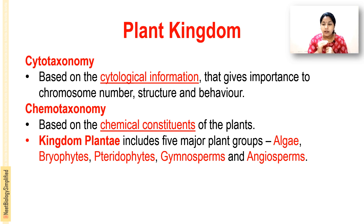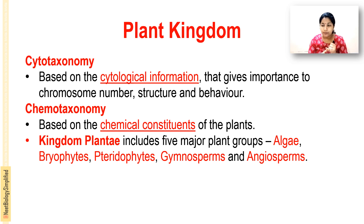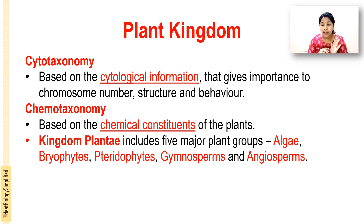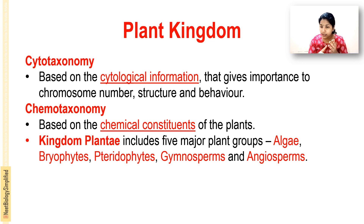Coming to the Plant Kingdom — we are going to study that Kingdom Plantae includes five major groups: algae, bryophytes, pteridophytes, gymnosperms, and angiosperms. These are the five major plant groups in Kingdom Plantae.